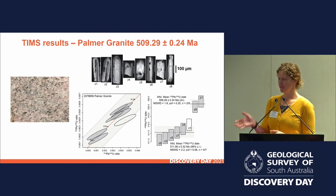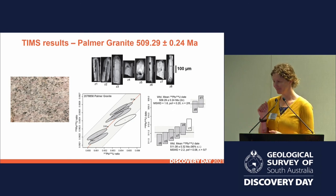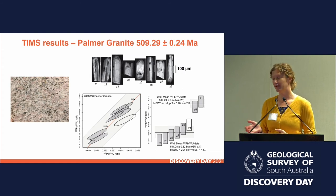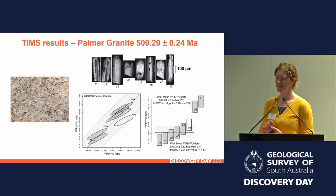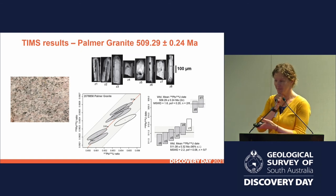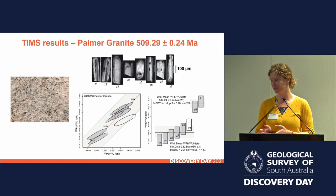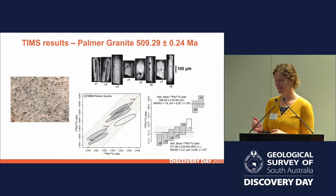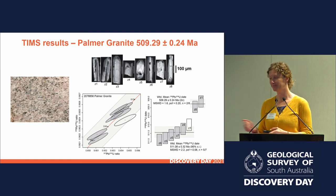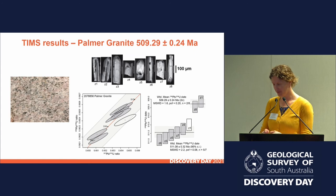The Pomegranate Granite has a much weaker fabric than the Rathgen but is pretty close to the same age. It has the same populations of zircons: a 509 Ma population and a 511 Ma population. I interpret this to mean they were emplaced at the same time, but that the Pomegranate Granite, for some reason, recorded less strain during deformation.